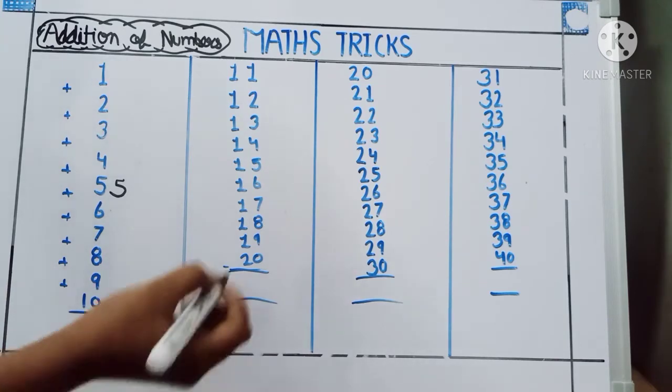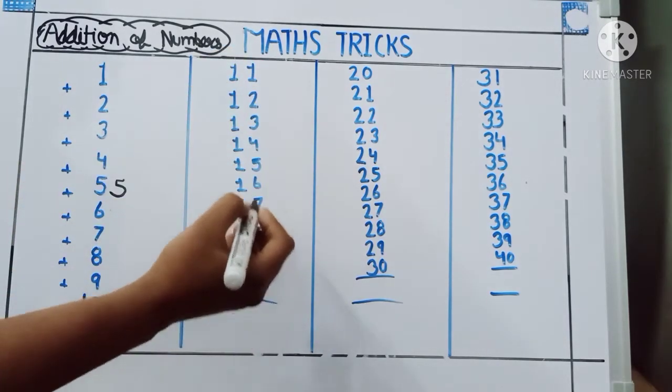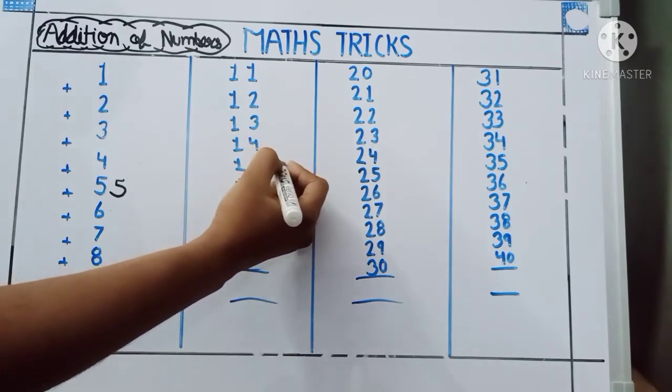55. For 11-20, what do you want to add? 5.